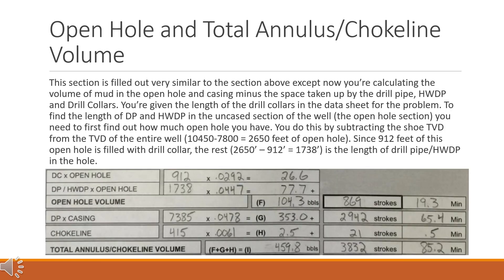Open hole and total annulus/choke line volume. This section is filled out very similarly to the section above, except now you're calculating the volume of mud in the open hole and casing minus the space taken up by the drill pipe, HWDP, and drill collars. To find the length of DP and HWDP in the open hole section, you first find how much open hole you have by subtracting the shoe TVD from the TVD of the entire well: 10,450 minus 7,800 equals 2,650 feet of open hole. Since 912 feet of this open hole is filled with drill collar, the rest — 2,650 minus 912 equals 1,738 — is the length of drill pipe/HWDP in the hole.